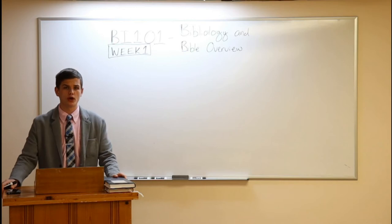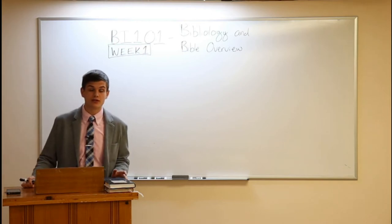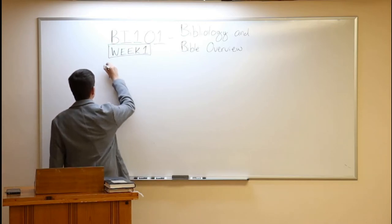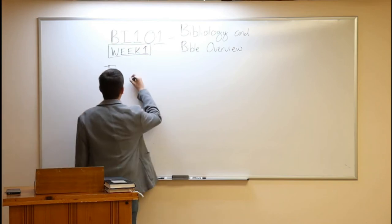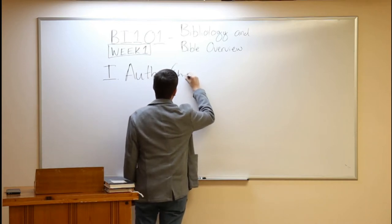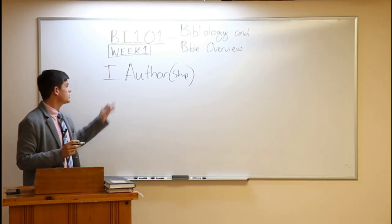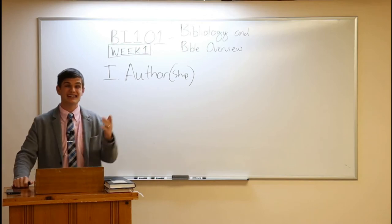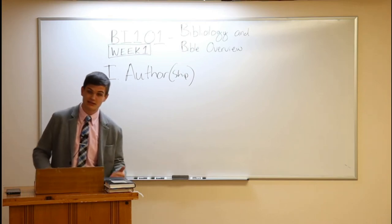I want to give you a general course overview and explain the program of study for these weeks. This class can be divided roughly into three sections. The first section is the authorship of the Bible — primarily looking at who wrote the Bible, how was the Bible written, how is it preserved, and what is the history of its preservation. We'll also talk about the translation of the Bible — the act of getting the Bible from one language into another — and look at some false views of preservation.